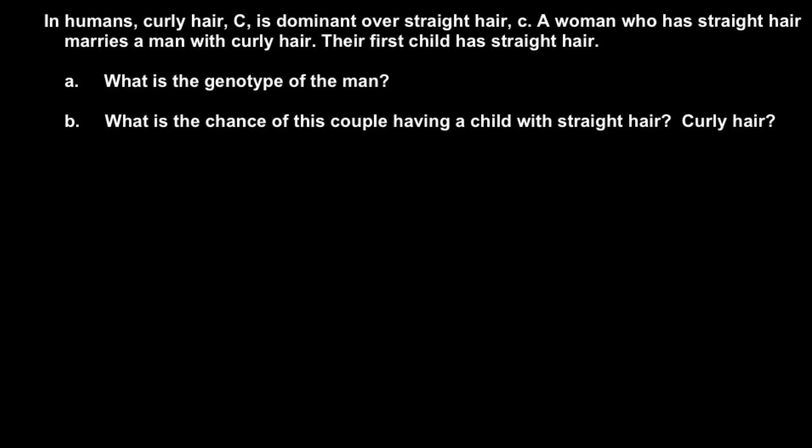So, because here we have two alleles—one would be dominant capital C, another one is recessive small c—these two alleles can produce three different genotypes. One would be capital C, capital C. Another one would be capital C and small c. And the third one would be small c, small c.